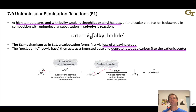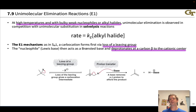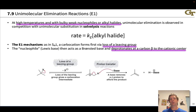E1 elimination is a unimolecular elimination process that happens under similar conditions to SN1. The E1 mechanism is fundamentally dissociative. First, we get a carbocation via loss of a leaving group from the alkyl halide — loss of a halide anion produces a carbocation.